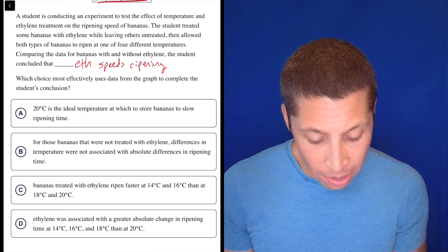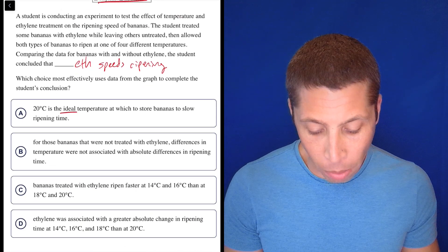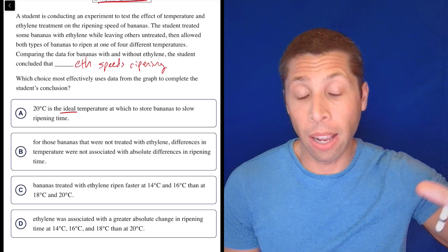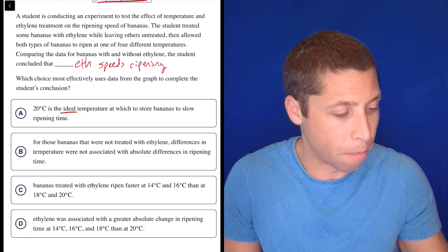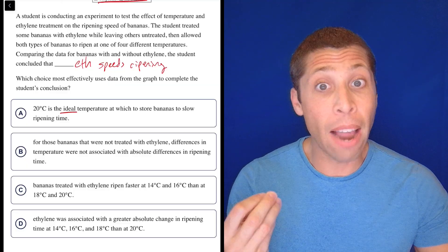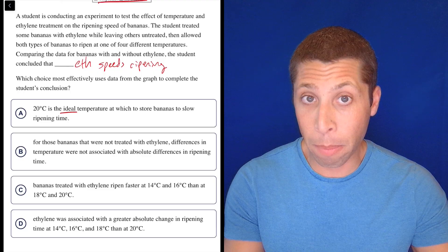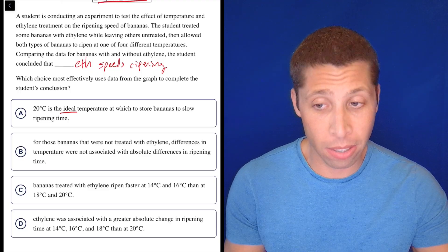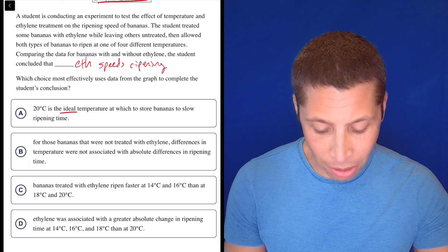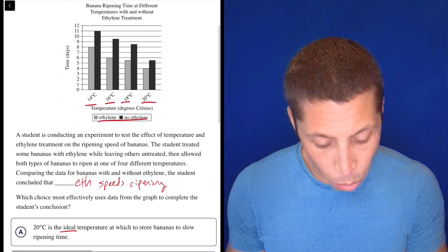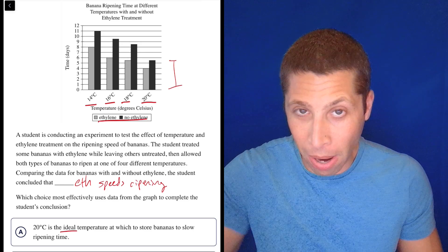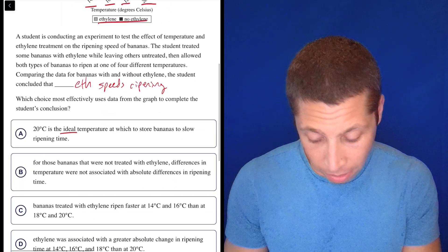20 degrees is the ideal? No way. Temperature at which to store bananas to slow ripening time? First of all, the word ideal just scares me regardless. I'm not going to cross the choice out because maybe there's something I'm missing, but like the ideal? Were we talking in this passage about finding the best thing? Did they ever say what would qualify as the best? I don't think so. So that really scares me, but let's check it anyway. 20 degrees is the ideal temperature at which to store bananas to slow ripening time? No, 20 degrees has the lowest time, so that's going to speed up the ripening time. So I don't know what's going on there. That's just wrong.